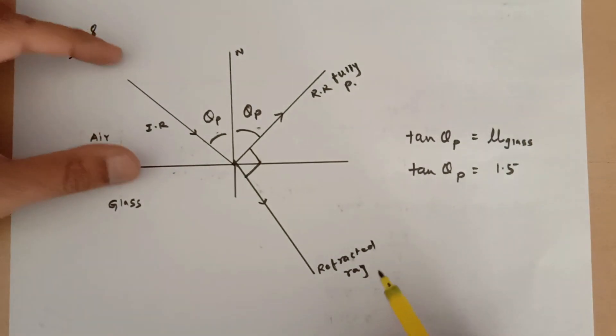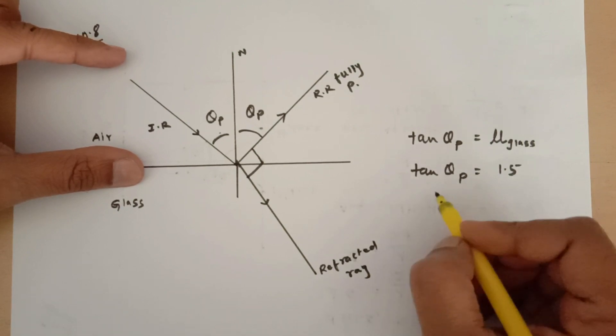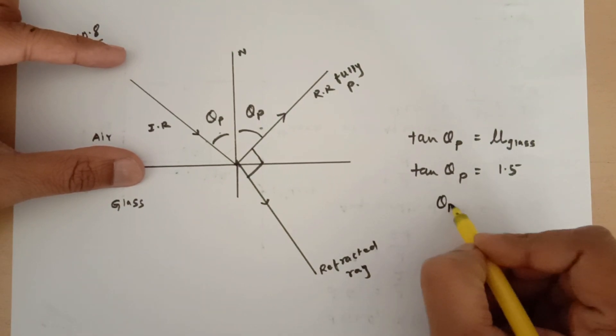So if I find theta p, that is equal to tan inverse 1.5, I will get this answer, approximately 56.3 degrees.